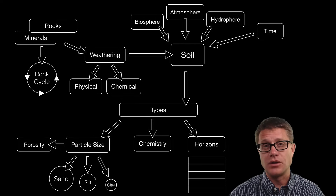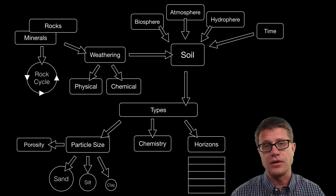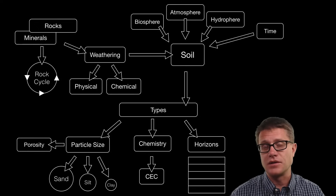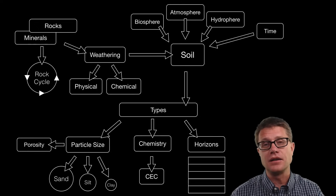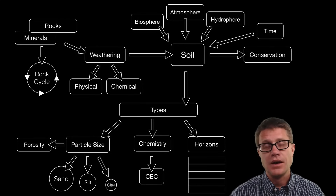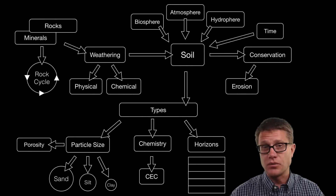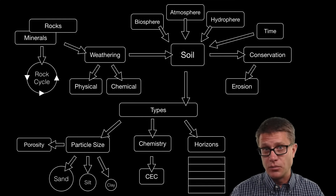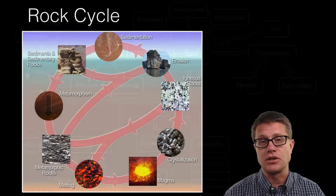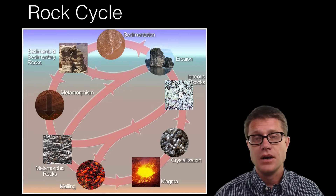We also have the chemistry of the soil. Where did the parent rock come from? One of the big things that is important in the chemistry is the CEC, or the cation exchange capacity — how easily does that soil deliver important ions to the roots themselves? Conservation is incredibly important with soils. We have soil erosion where we are physically removing the soil, and then we also have salinization, or salting of the soil, which is contributing to soil loss.